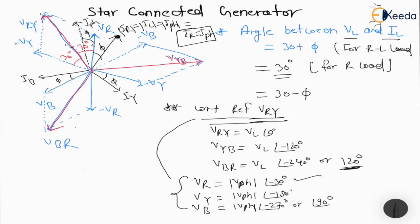These are the voltages when VRY is taken as reference. When studying AC circuits, star or delta connections, it is very important what we select as a reference — a good reference makes calculations easier. Phase sequence is the order by which individual phase voltages attain their peak values: if the sequence is RYB, R attains its maximum first, then Y, then B. That is all about the star connected generator. Thank you.